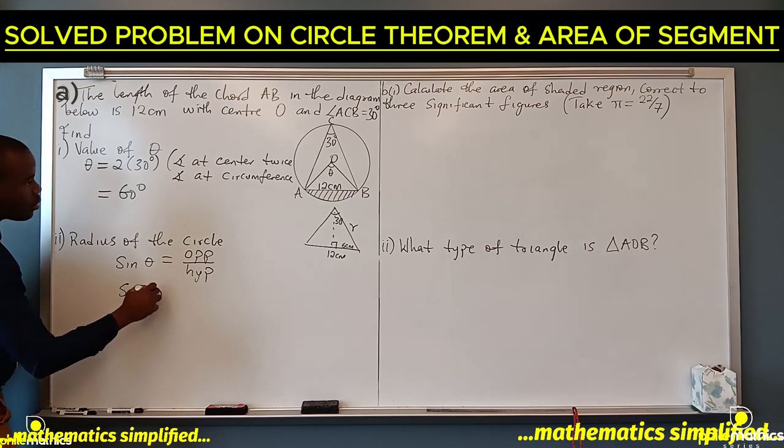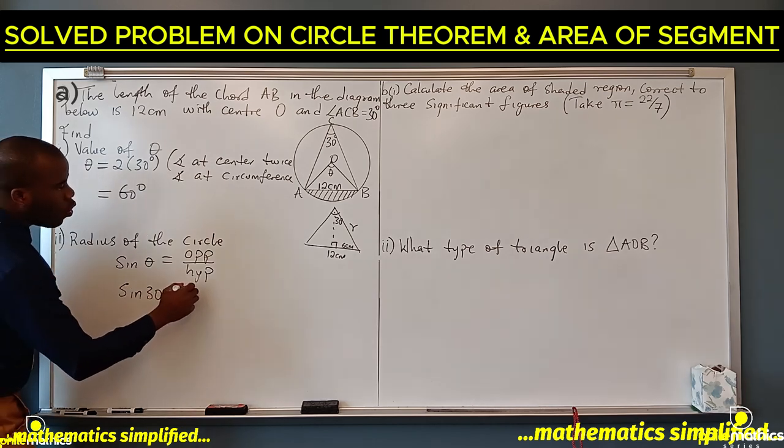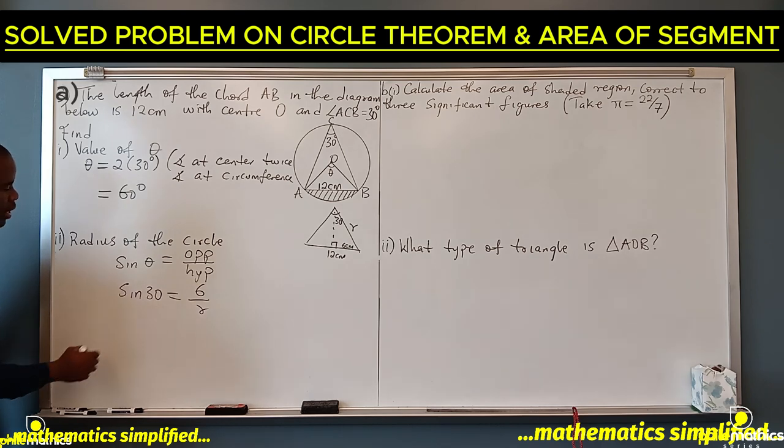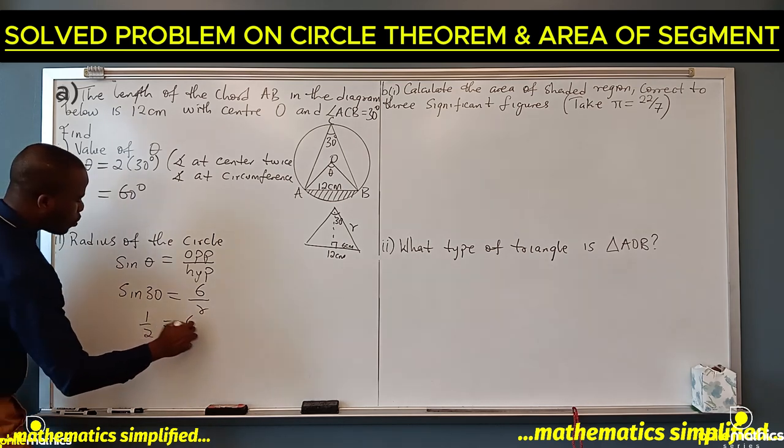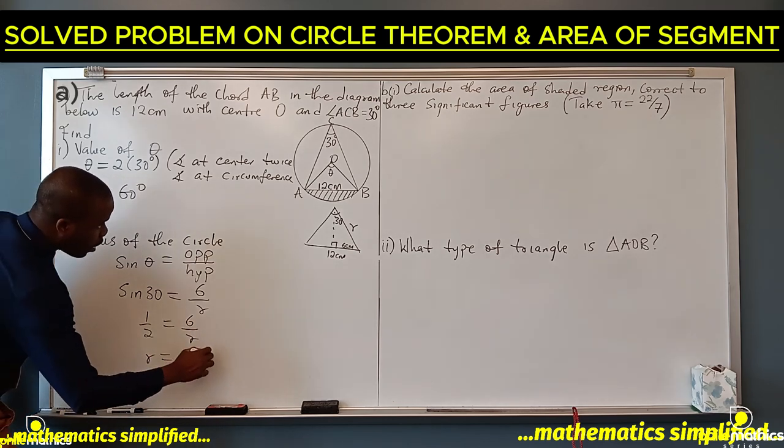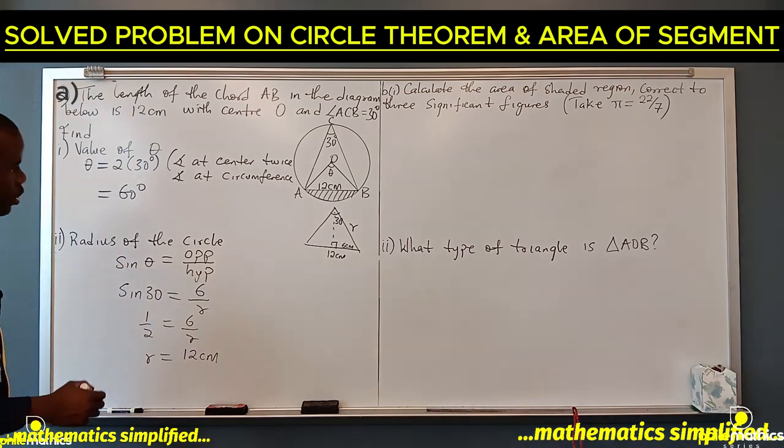Sine 30 is opposite 6 over r. Sine 30 is 1 over 2, so 1 over 2 equals 6 over r. So r equals 2 times 6 which will be 12 cm. So our radius is 12 cm.